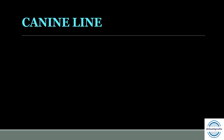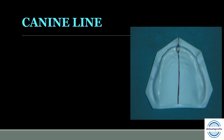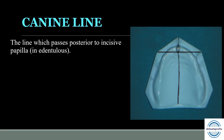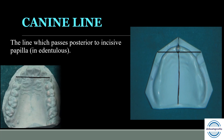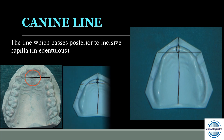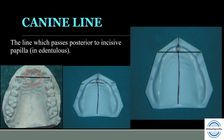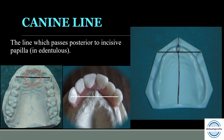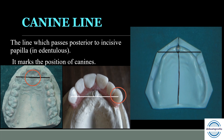Canine line: once we have marked the incisive papilla and the midline, the line which passes posterior to the incisive papilla horizontally on the edentulous cast is the canine line. In the dentate person, this line passes through the tips of the canines and from the center of the incisive papilla. In the edentulous patient, when resorption of the alveolar bone takes place, the incisive papilla moves forward and upward, so the canine line passes posterior to the incisive papilla. During teeth arrangement, it should pass from the cusp tips.